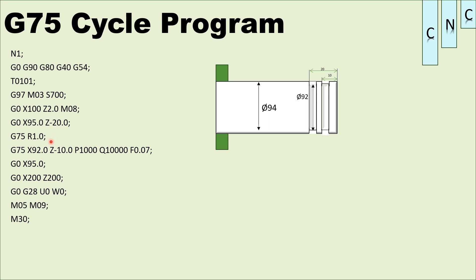R1.0 is the retract amount (back-off point). U1.0 is the X-direction increment, and R1.0 is the Z retract. Next, G75 X92 is the finishing diameter. Z-20 is the end of cycle depth. P1000 is the first depth of cut — 1000 microns (1mm). Q is the Z-direction distance. Next, P1000 is 10mm distance — that is the travel distance we need to cut.